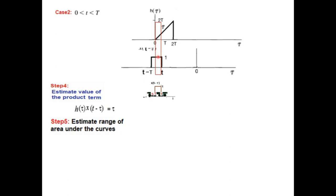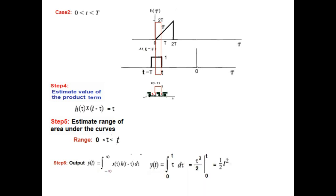This is the area under the curve showing the overlap. The starting point 0 is defined clearly. The end point is small t, so the range of tau will be from 0 to t — that is the limit of integration. Putting the limit and the integrand tau, we integrate to get tau²/2, and evaluating the limits gives the final answer: half t squared.